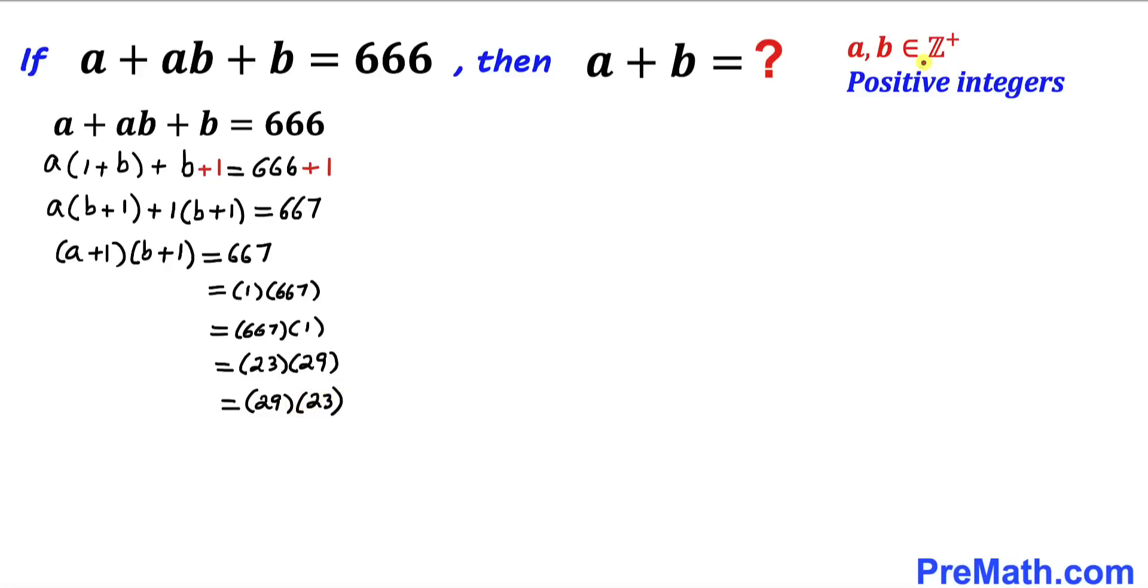Now let's remember that a and b are positive integers, so a plus 1 must be greater than or equal to 2. Likewise, b plus 1 is greater than or equal to 2 as well. Therefore, none of these are going to take the value 1. We're going to reject these two possibilities.